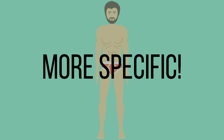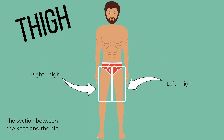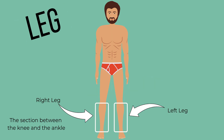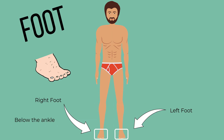Let's get more specific. The thigh is the section between the hips and the knees. The leg is the section between the knees and the ankles. And the foot — I hope you know this one — it's below the ankle.